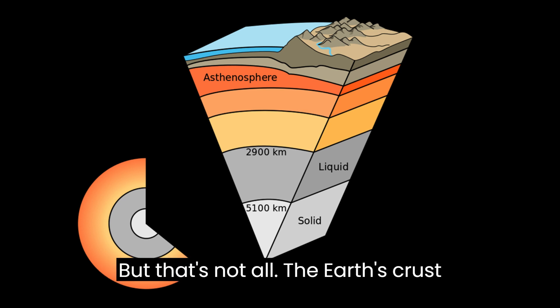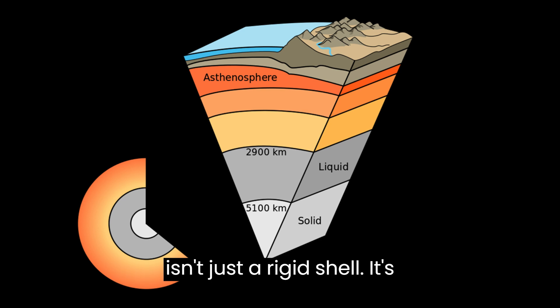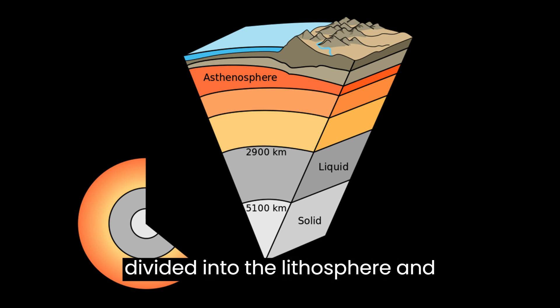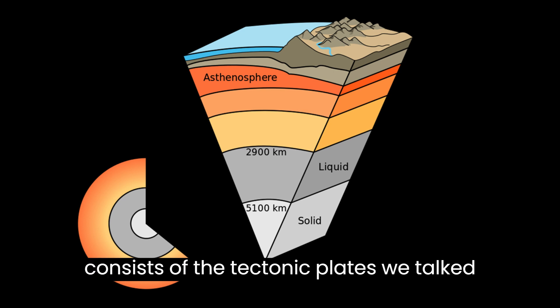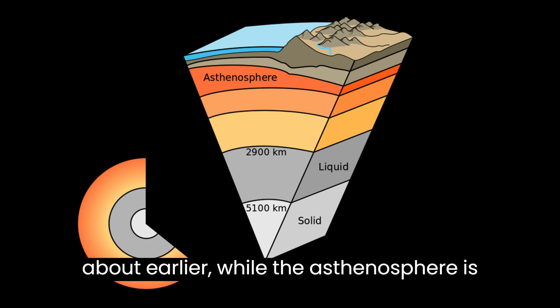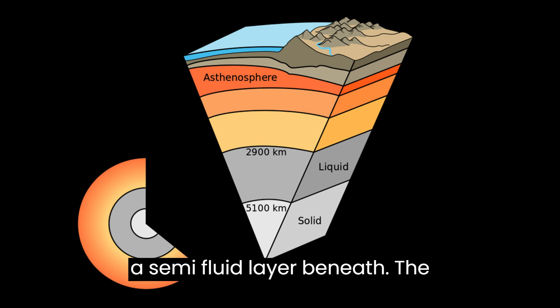But that's not all — the Earth's crust isn't just a rigid shell. It's divided into the lithosphere and asthenosphere. The lithosphere consists of the tectonic plates we talked about earlier, while the asthenosphere is a semi-fluid layer beneath.